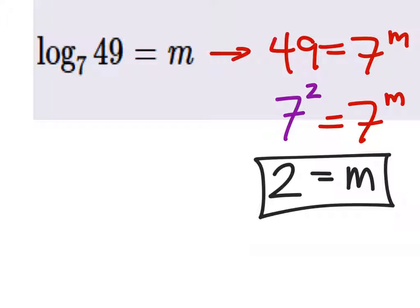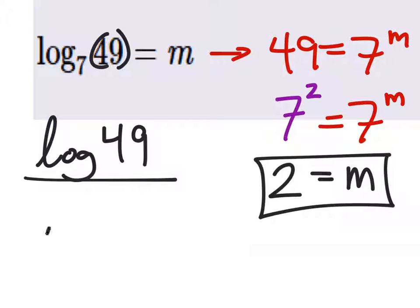what we would do is we would take the log of 49, hopefully you guys remember this, and just divide it by the log of 7. Now these are the two common logs because we don't have a base on them, but if you didn't want to do those,